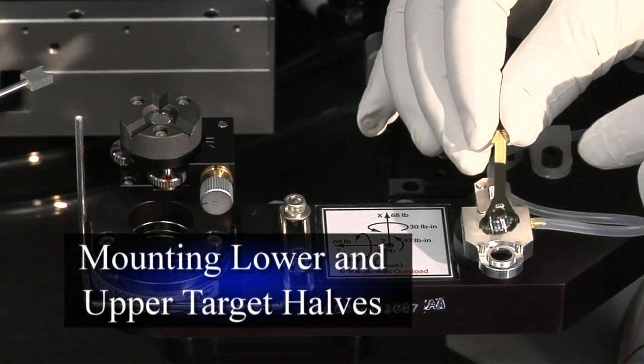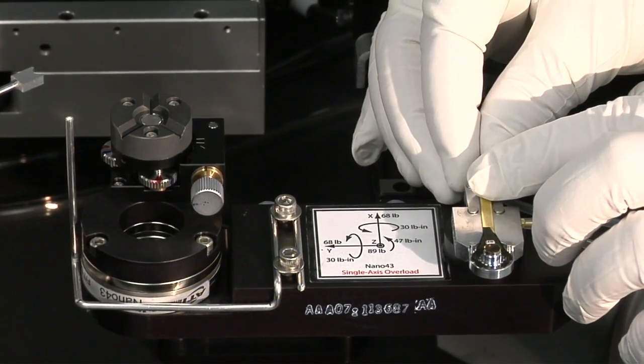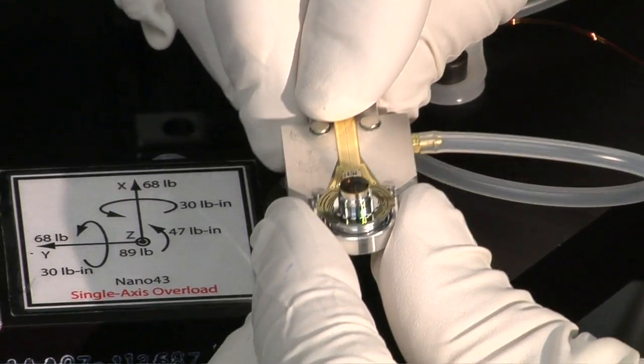The lower half of the target is mounted onto its tooling and held with vacuum pressure. The lower target half is loaded onto the machine.